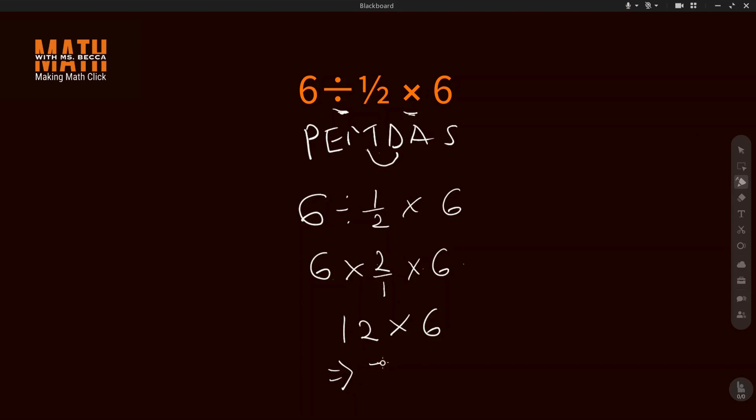12 times 6 will give 72. So the answer to this question is 72. Don't make the mistake of multiplying first, because if you multiply first you will be getting a wrong answer.